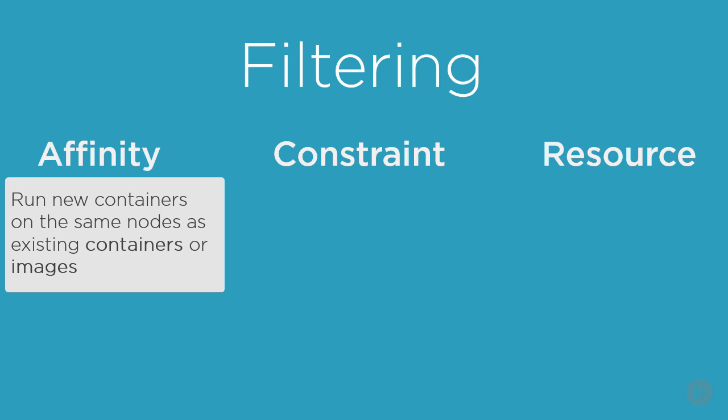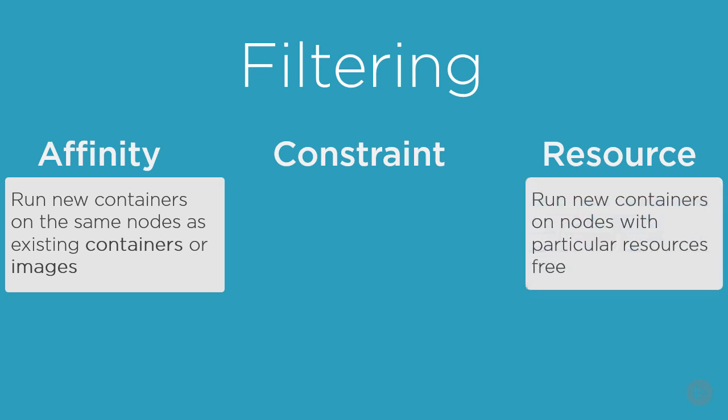Resource filters allow us to specify things like: run this container on any node that's got a particular resource free — maybe a network port, let's say a node that's got TCP port 443 free and available.